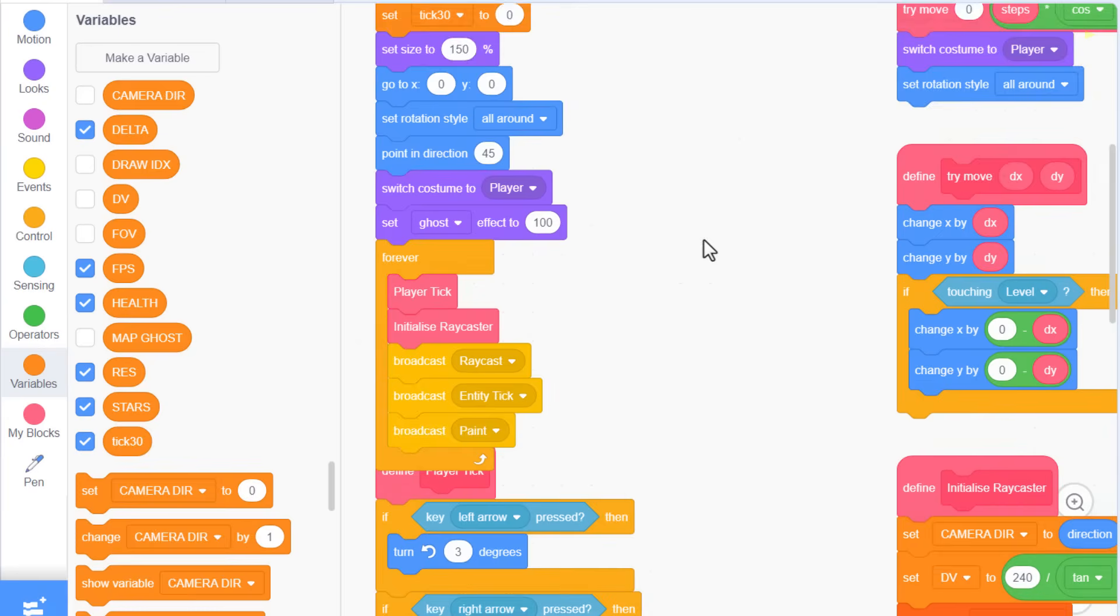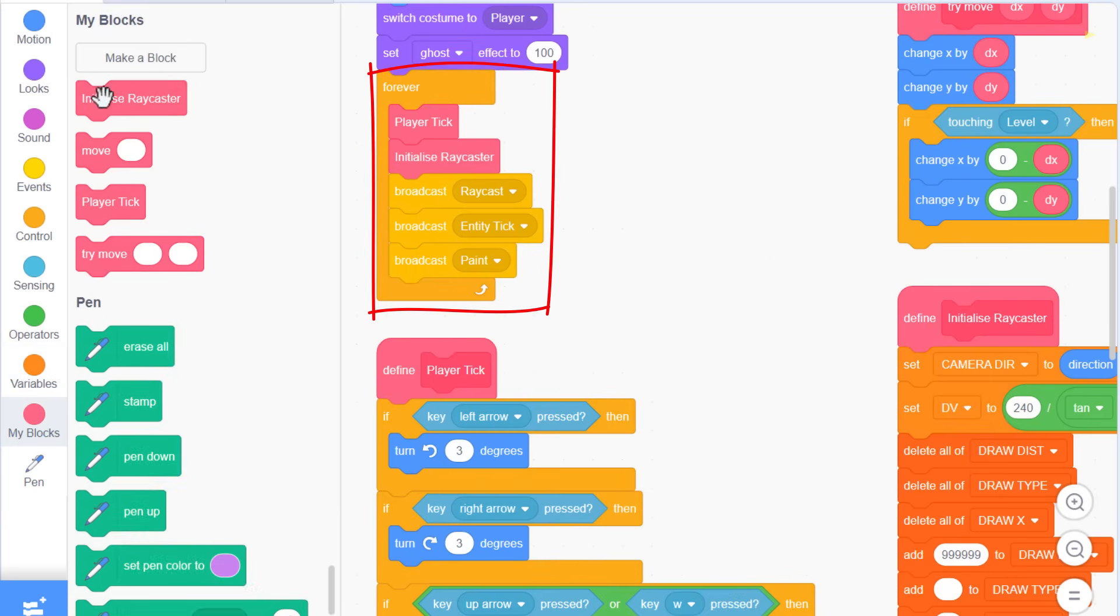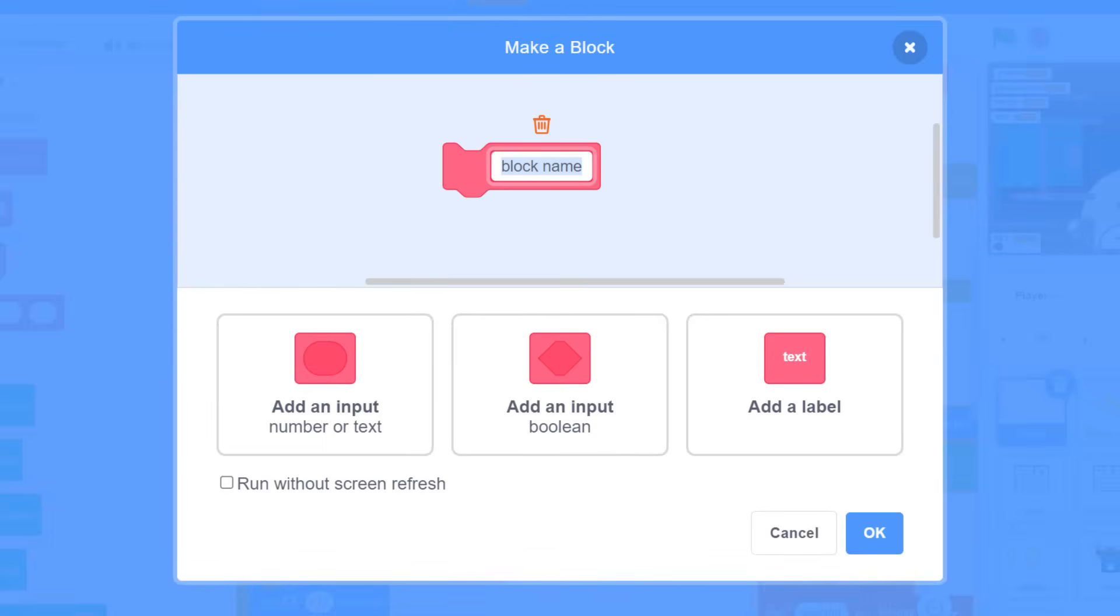Ok, scrolling down, here's our main game loop. We'll add our FPS scripts here, but in a new custom block. We'll name this FPS frames per second, and add a nice new input named last tick 30. And check the run without screen refresh. Why not?